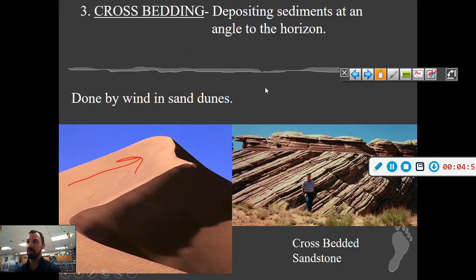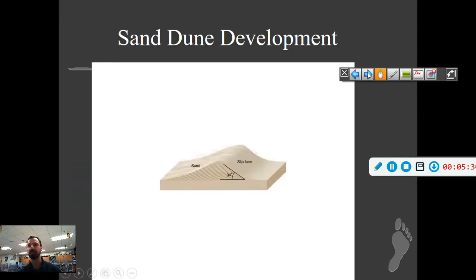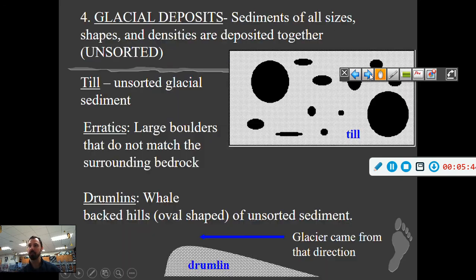Cross bedding is depositing sediments at an angle to the horizon. This type of sorting happens on sand dunes because the wind blows up the gentle slope and then collapses down the other side. Also, crustal movements can lead to cross-bedded rock. Remember: rock layers are deposited horizontally first, then crustal movements happen. Up the gentle slope with the wind is the windward side. The side where it collapses at a high angle is the leeward side of the sand dune.